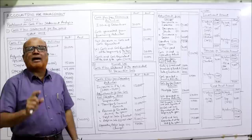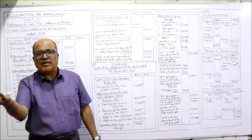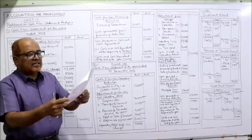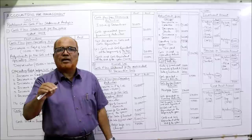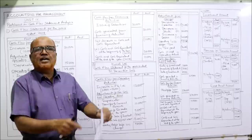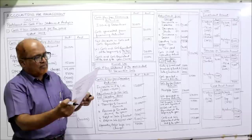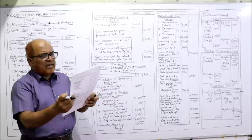Liability side: creditors — last year 1,68,000, current year 1,34,000 — decrease in current liability should be deducted. Decrease in creditors: minus 34,000, in bracket. Tax provision we have already taken; mortgage loan will be taken in financing activity. So only one current liability: creditors. Asset side: stock — last year 2,40,000, current year 2,10,000 — decrease in stock, decrease in current asset should be added: add 30,000.